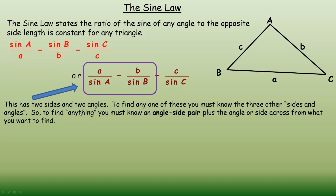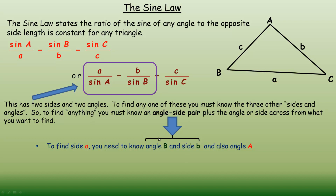For example, to find side A, you need the angle-side pair of angle B and side B, plus you need to know angle A, since it is the angle across from the side you're trying to find.